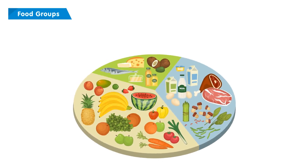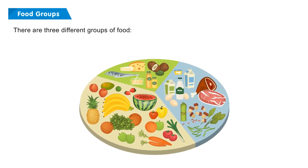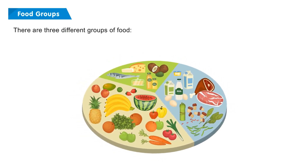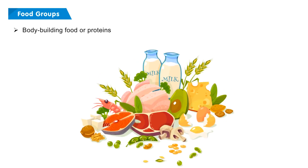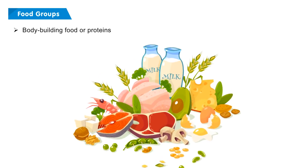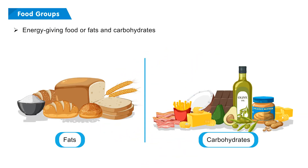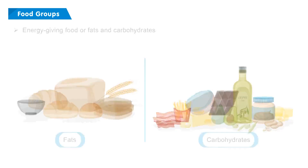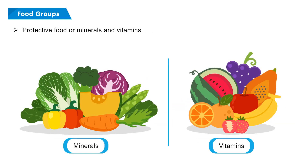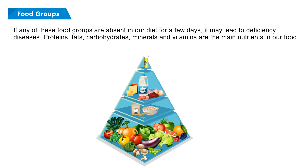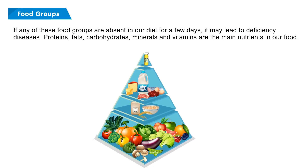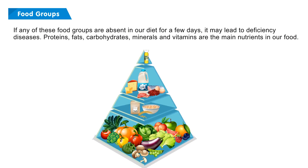Food Groups: There are three different groups of food — Bodybuilding Food or Proteins; Energy Giving Food or Fats and Carbohydrates; and Protective Food or Minerals and Vitamins. If any of these food groups are absent in our diet for a few days, it may lead to deficiency diseases.